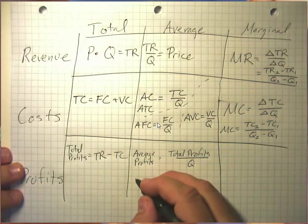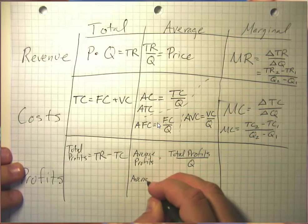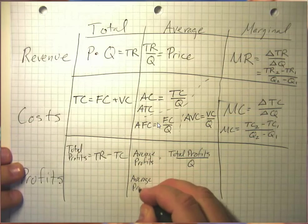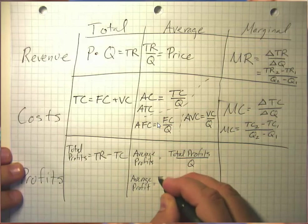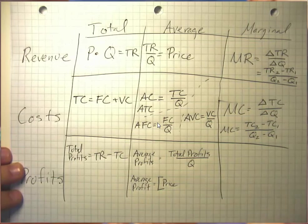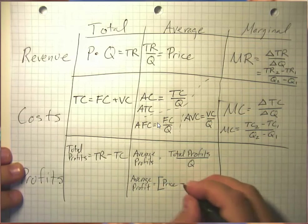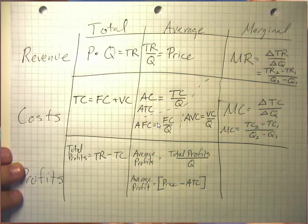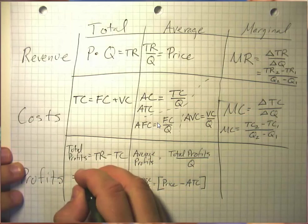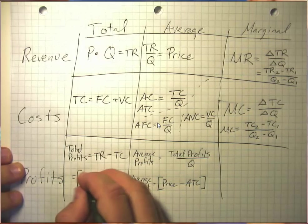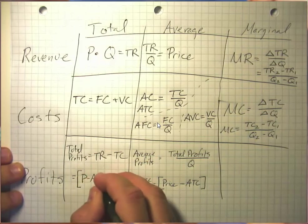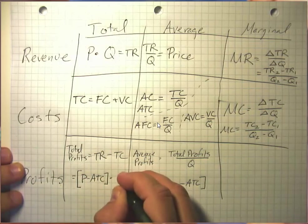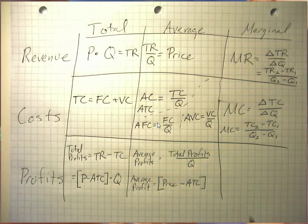We can actually think about average profit per unit. It's also true that average profit per unit is the price we sold our goods for minus the average total cost per unit. Once we think about this, we can also see that total profits are also equal to average profit per unit, price minus average total cost, times the quantity sold. So either of these ways of doing it will get us the same answer.